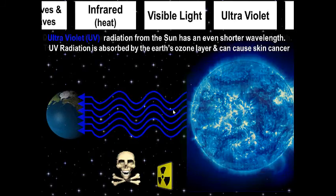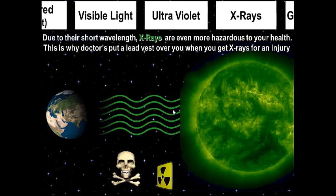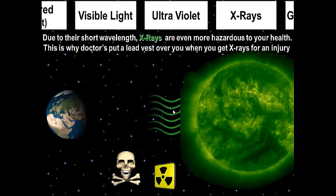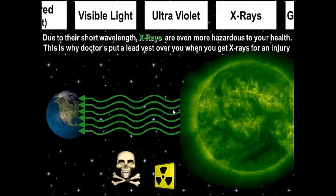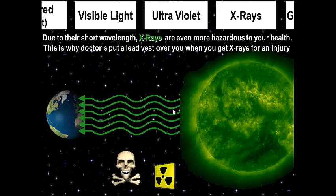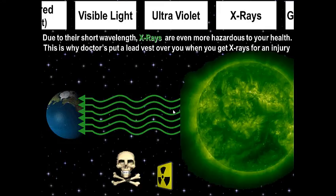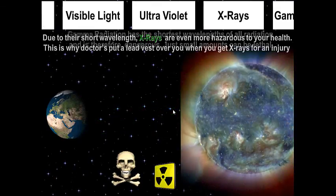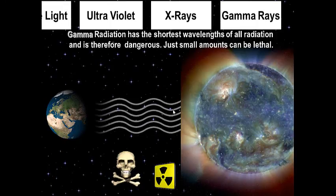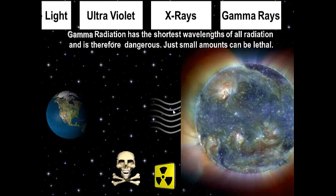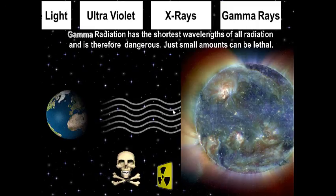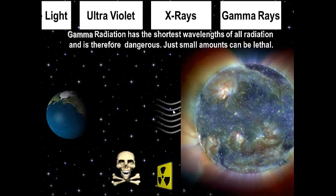Even more dangerous than UV rays are X-rays. Due to their short wavelength, X-rays are hazardous to your health — this is why doctors put a lead vest over you when you get X-rays for an injury. And finally, even more dangerous than X-rays are gamma rays. Gamma radiation has the shortest wavelength of all and is therefore the most dangerous; small amounts can be lethal. Luckily, not too much gamma radiation hits Earth.